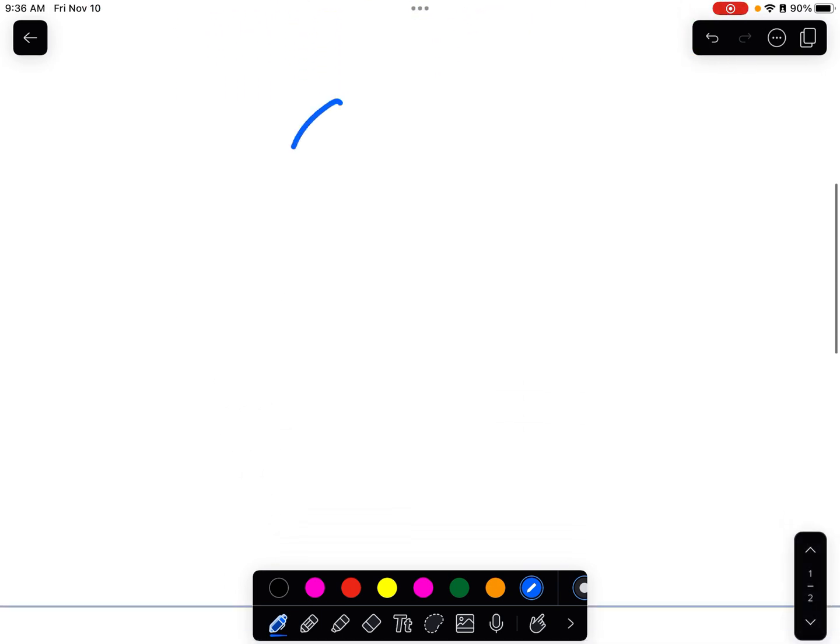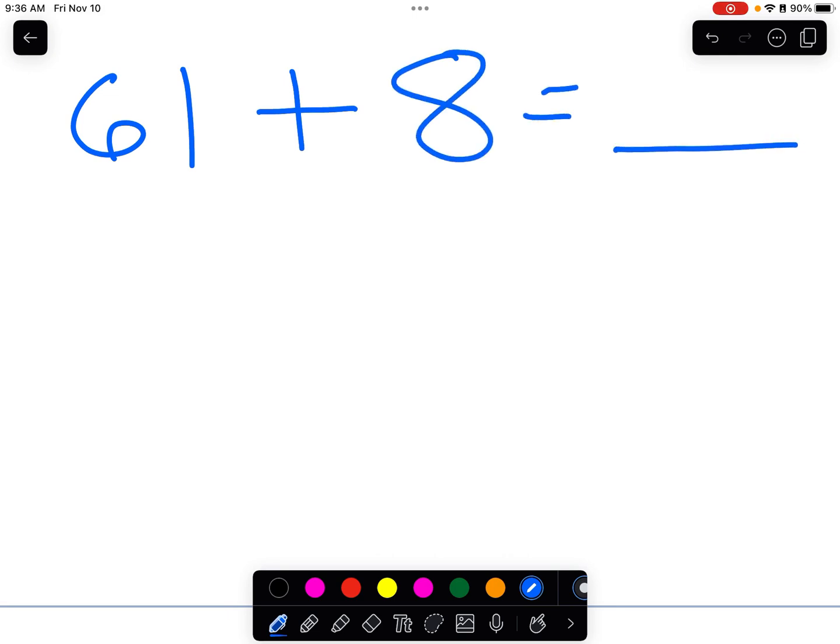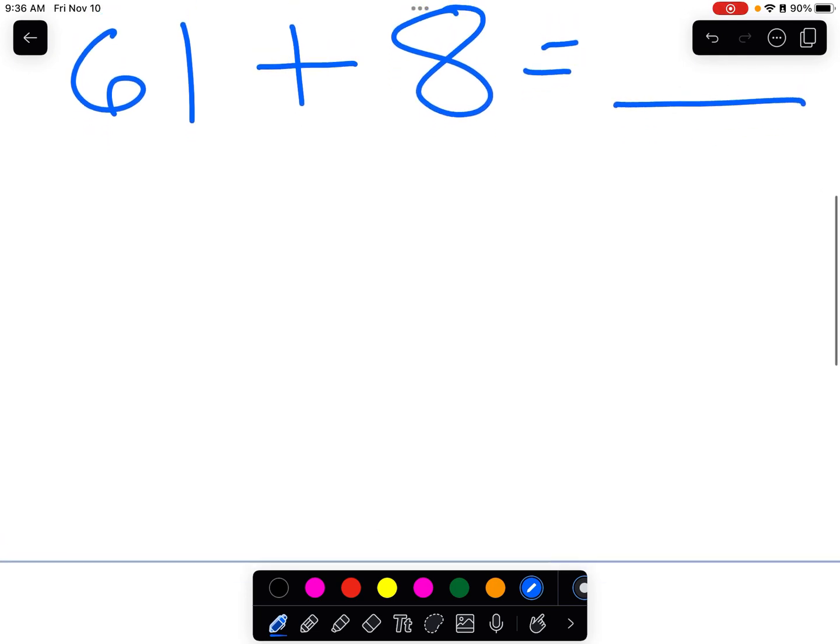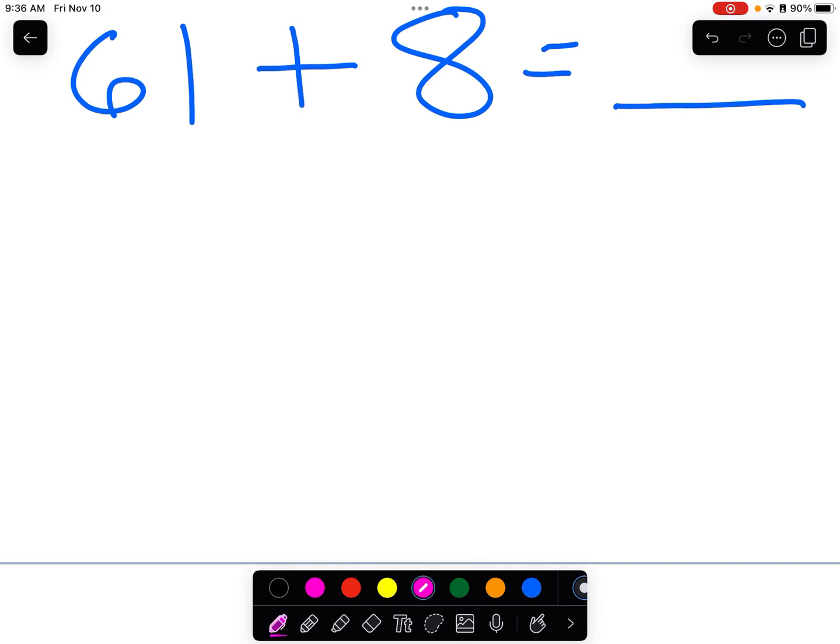Okay, let's say we have 61. Oh, you know what? Let's say we do it this way. Let's say you're presented with this problem, 61 plus eight. Well, we're going to line up the problem. Let's do another color. Let's do pink. I'm kind of in a pink mood today.